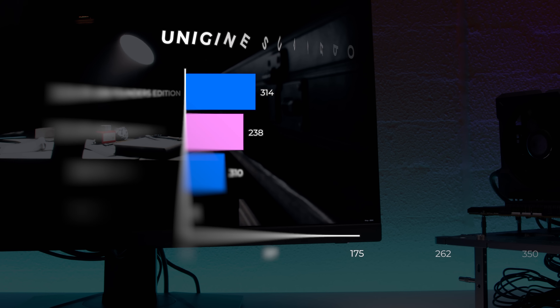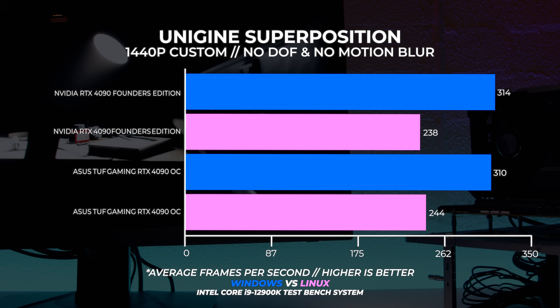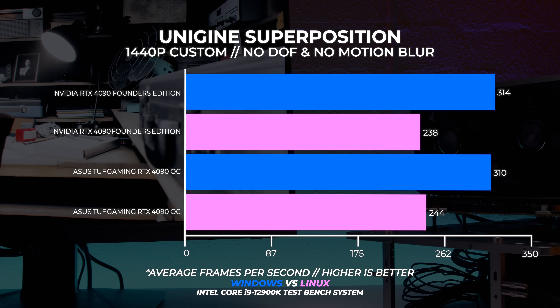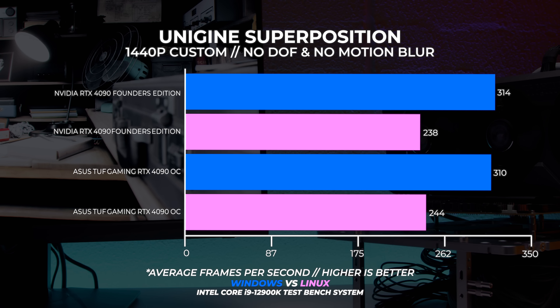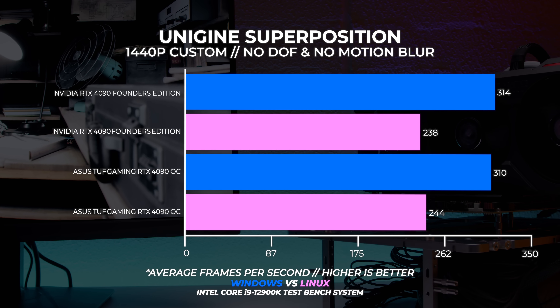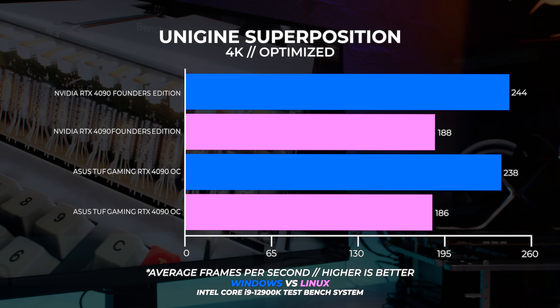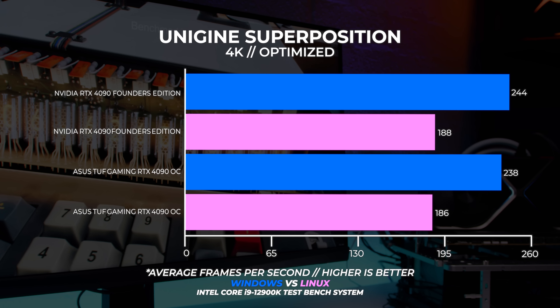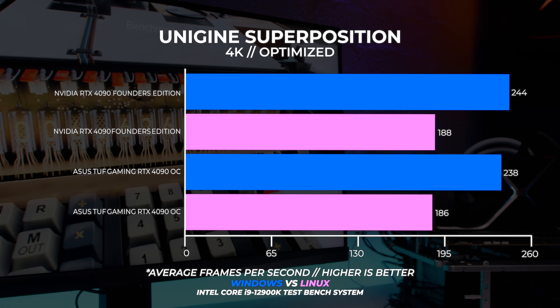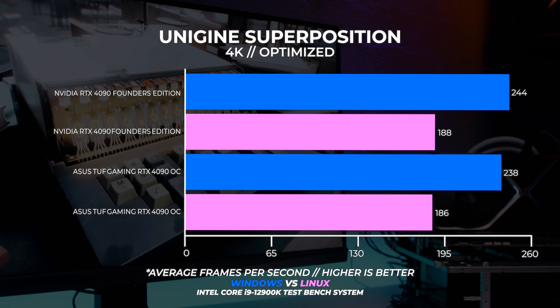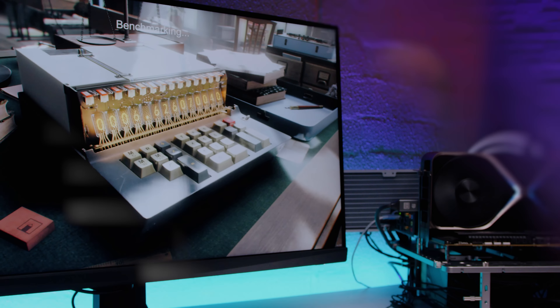At 1440p we're seeing that echoed again, with the Windows version of the benchmark far outperforming the Linux-based OpenGL version. Again, no surprises there whatsoever. At 4K we're seeing the same thing happen once again, with the Windows DX11 version of the benchmark smashing the Linux OpenGL version in terms of performance. You shouldn't be surprised by this result, but it is worth sharing.